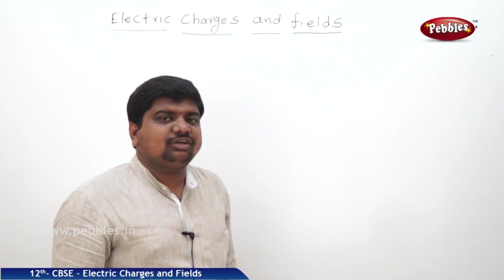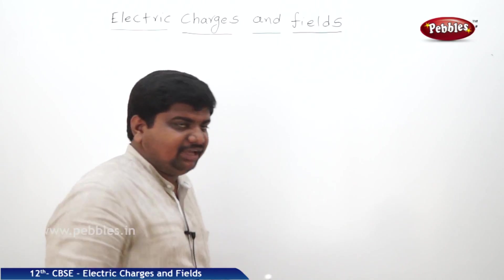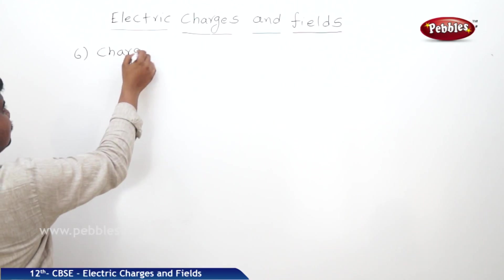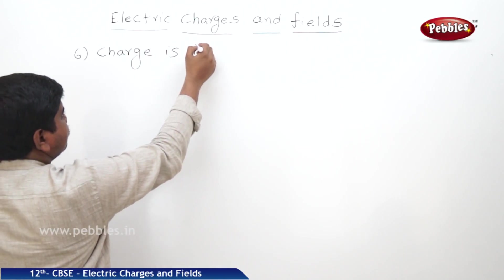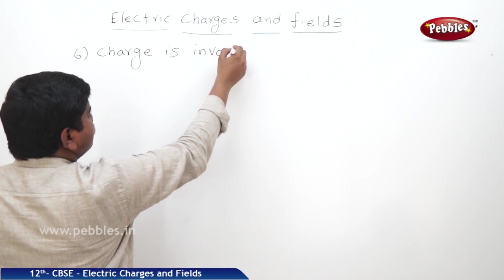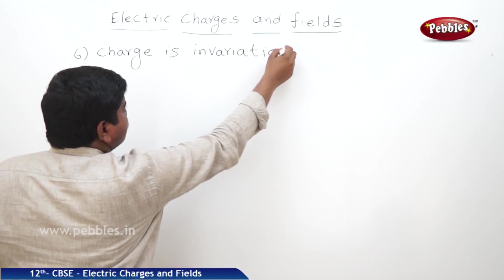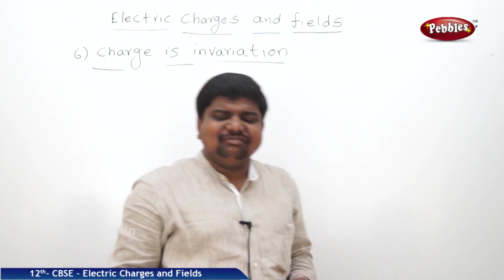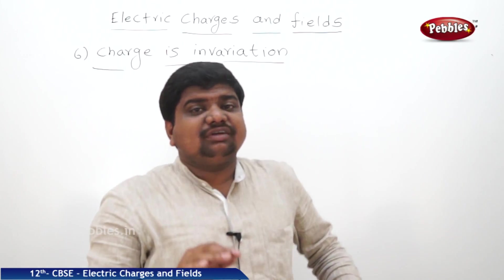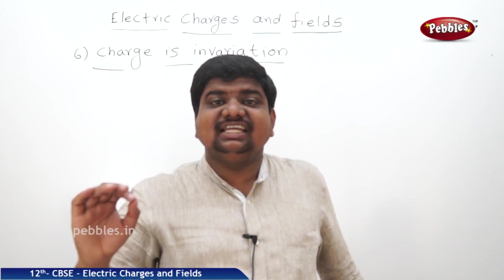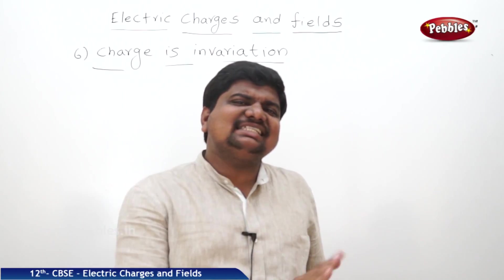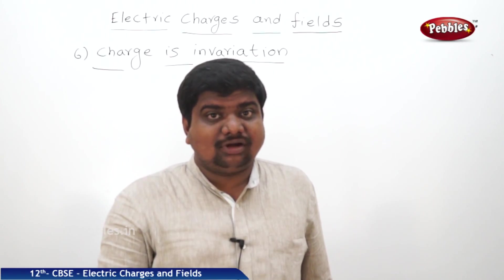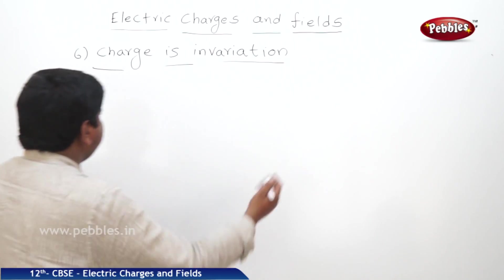The sixth property of the charge is charge is invariant. What is the meaning of invariant? The magnitude of charge won't change with respect to the change in velocity. Whatever may be the velocity of the charge, the magnitude of charge is not going to change. This is called invariance of the charge. What is the seventh property?